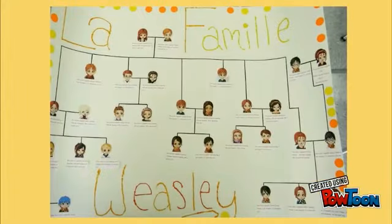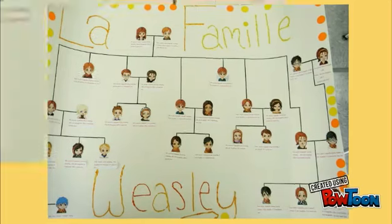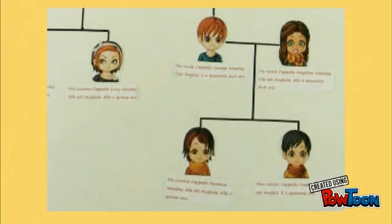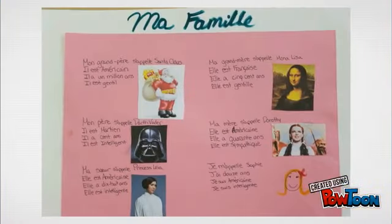Let's look at some examples. This person made a family tree out of the Harry Potter family — they made themselves one of Harry Potter's children. This project was very intricately done on a large piece of poster paper. Your project does not need to be this big or this intricate, but if you want to, you could do something special like this. Here's another really well done example. It's a lot smaller, but still very nicely put together. And I love that the mother is Dorothy.